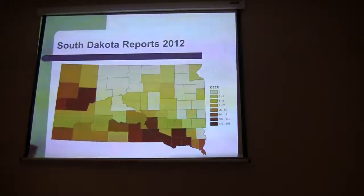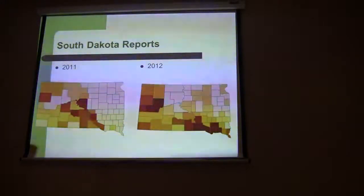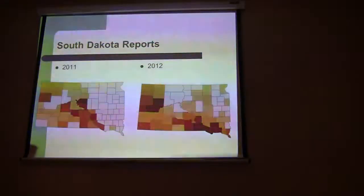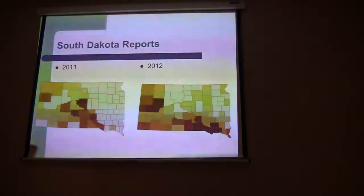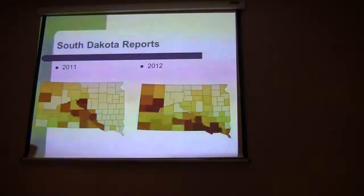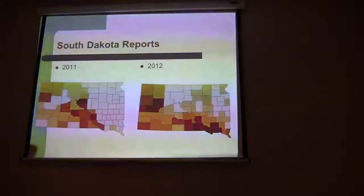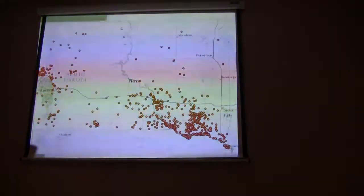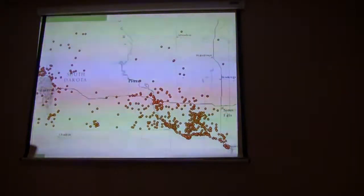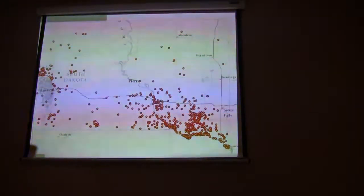I did the same kind of map last year for comparison. It's pretty interesting to see that the distribution of the disease has changed a little bit. Last year we had heavy losses in the central part of the state — that's where our highest number of reports were — and it went down a little bit in the south-central. But this year, the heaviest reports are in the western part and the southeast. Overall you can tell there are more reports and we are seeing heavier losses.